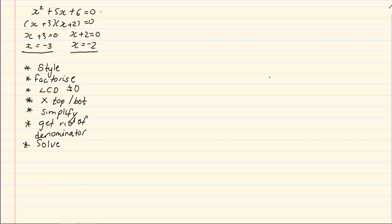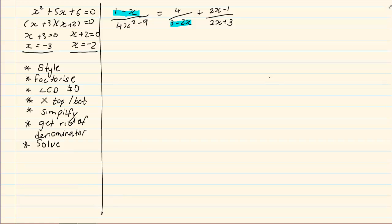Let's do the following example. If we have 1 minus x all over 4x squared minus 9 is equal to 4 over 3 minus 2x plus 2x minus 1 all over 2x plus 3. Now if you look at the equation, you will see that the denominator 3 minus 2x is not the correct style and also 1 minus x is not the correct style.